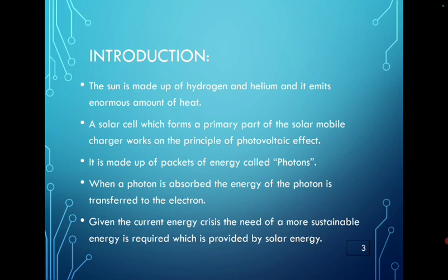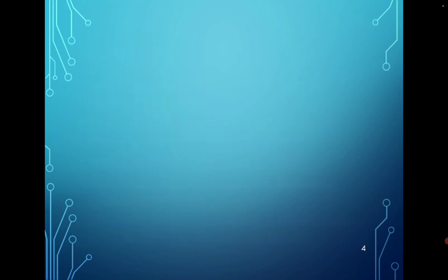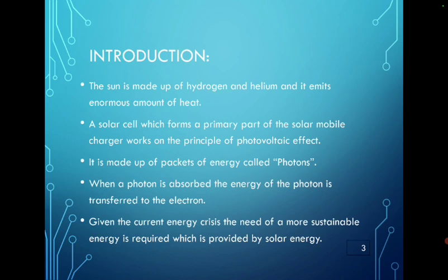It is made up of packets of energy called photons. The positively charged elements are photons and the negatively charged elements are electrons. When a photon is absorbed, the energy of the photon is transferred to the electron. Given the current energy crisis, the need for a more sustainable energy is required which is provided by solar energy.